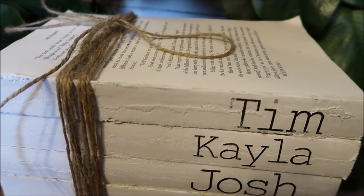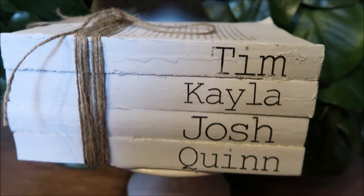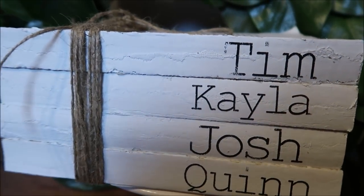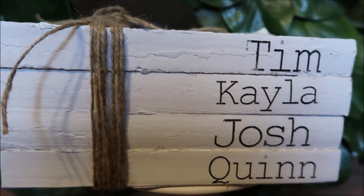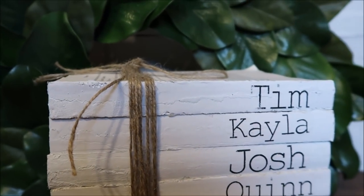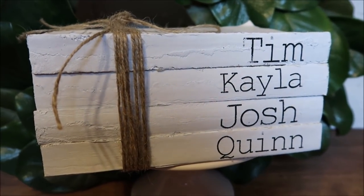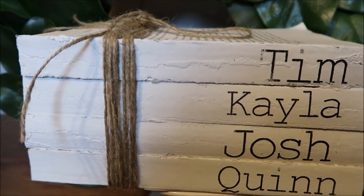Hey everyone, welcome back to my channel. Today I'm sharing how I made my rustic monogrammed books. I used my Cricut to cut out a stencil for each name of our family members and I'll show you a little trick that I have to prevent paint from bleeding through the stencils.